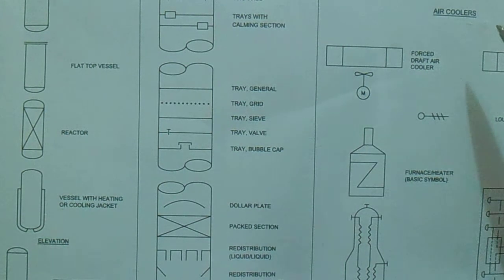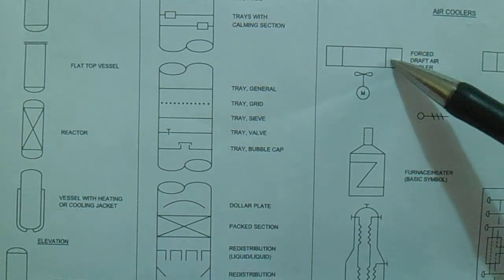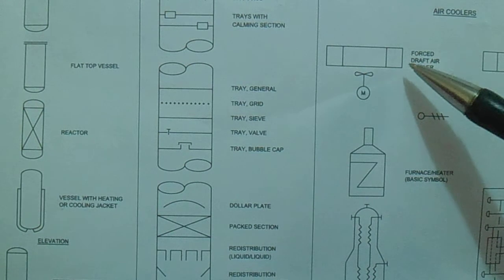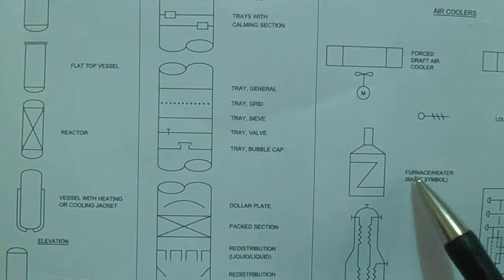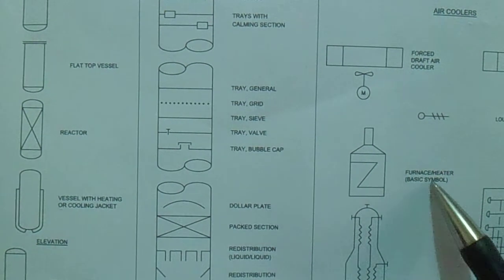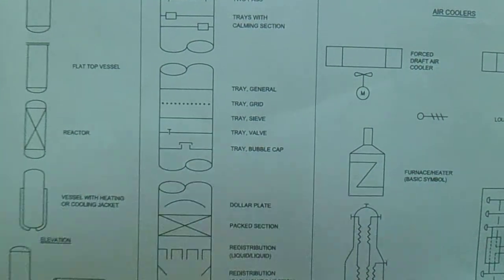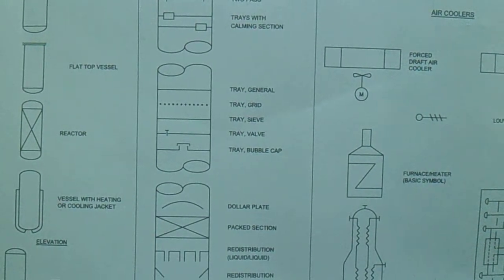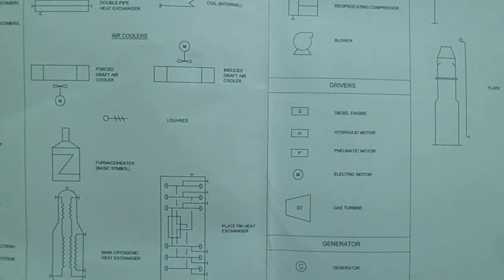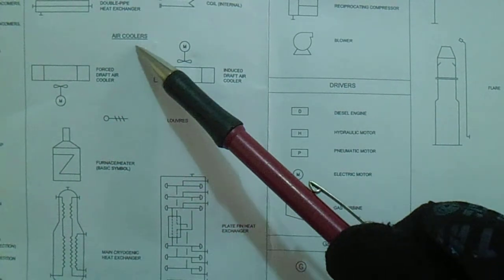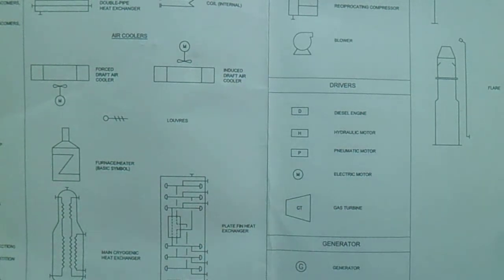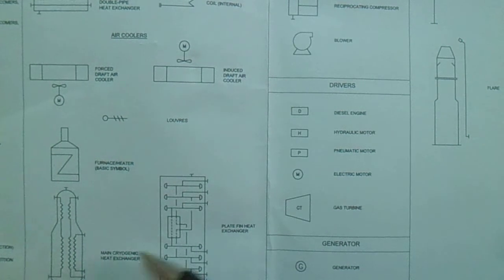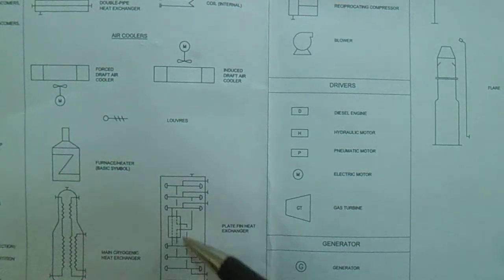Now for air coolers — we have a forced draft air cooler. We also have a submerged sparger/heater, a main cryogenic heat exchanger, and a flat fin heat exchanger.